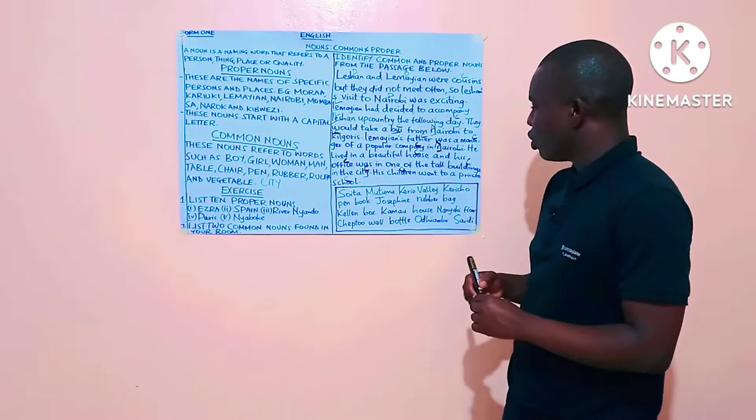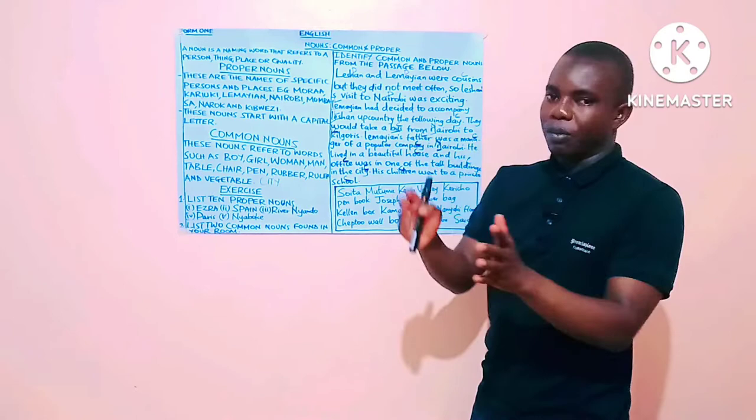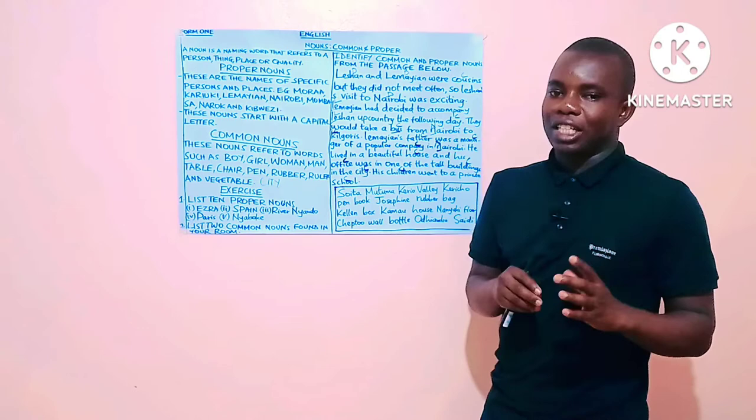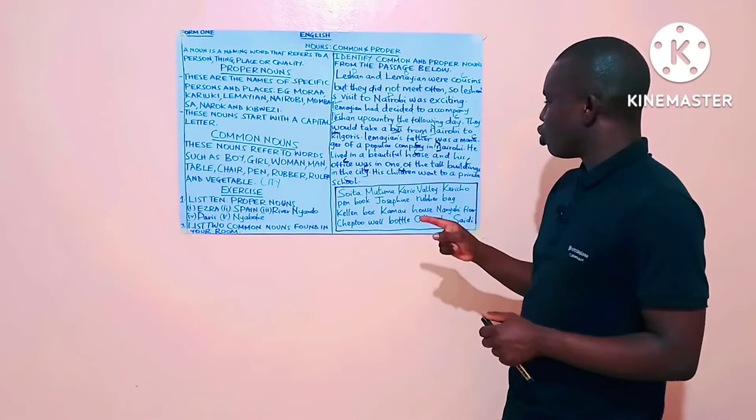Now, there are some words here below that you are expected to put into two columns. That is, on one column proper and on the other column common noun. Let me just read them very fast, so that you can get to try them on your own. We have Sohita, we have Mutuma, Kiriobali, Kiriicho, Pen, Book, Josephine, Rubber, Bag, Kellen, Box, Kabau, House, Nenuki, Floor, Chipto, Wall, Bottle, Udiyambwa and Saidi.